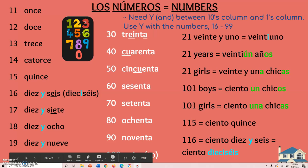When we need an and — if you look in blue at the very top in your notes, you'll see that you need a y, which means and, between the tens column and the ones column. So between the numbers 16 through 99, you need an and — y — between a tens and a ones column. When you say 16, you're saying ten and six. When you say 23, you're saying twenty and three. So thirty-three would be treinta y tres. Forty-five would be cuarenta y cinco. Fifty-three would be cincuenta y tres.